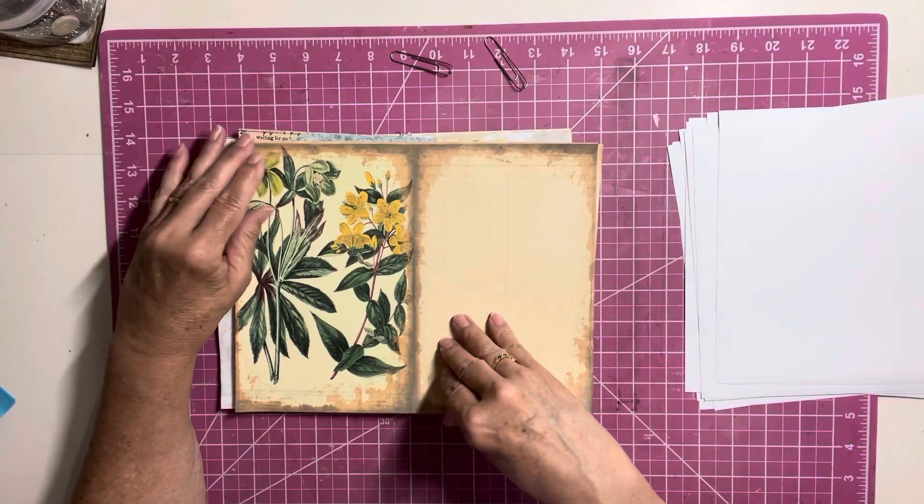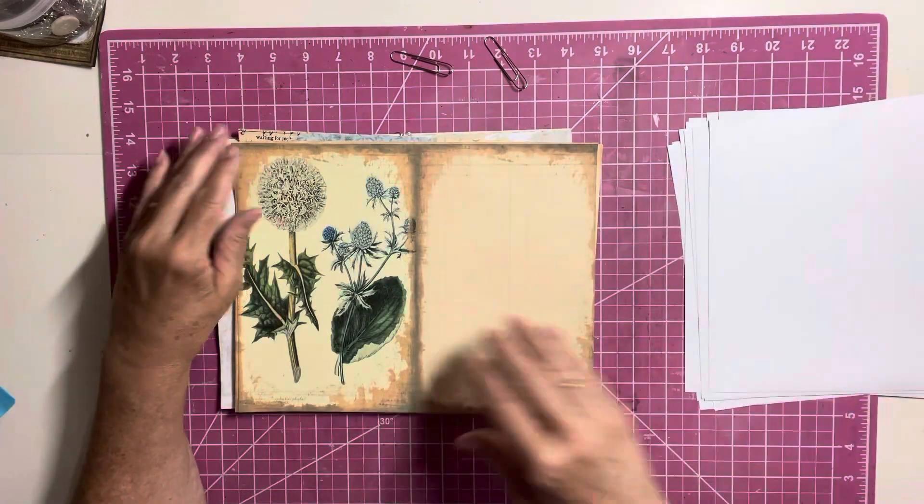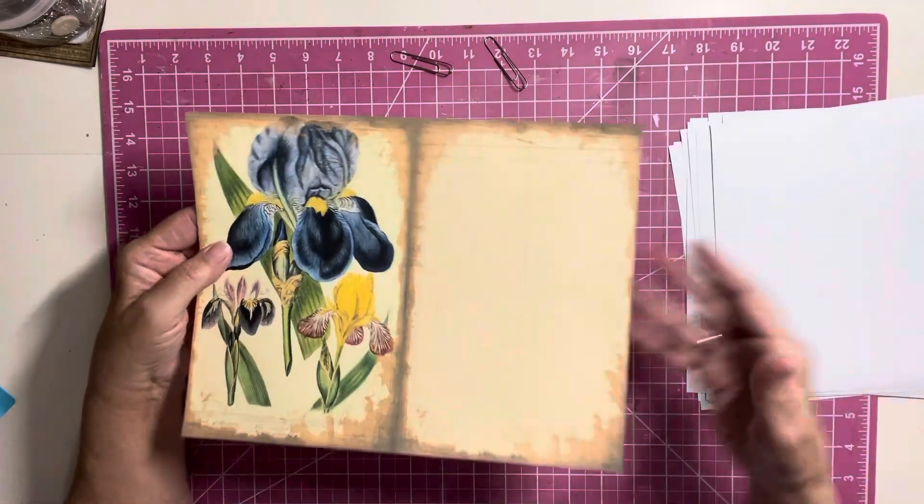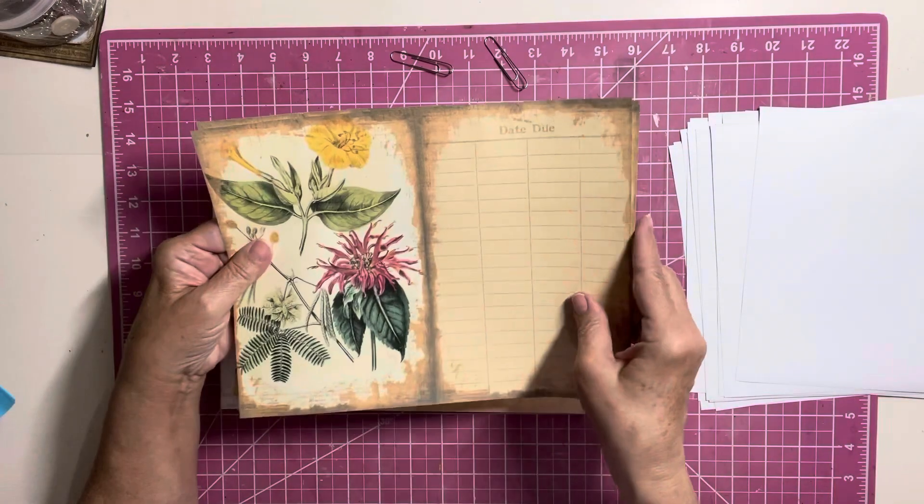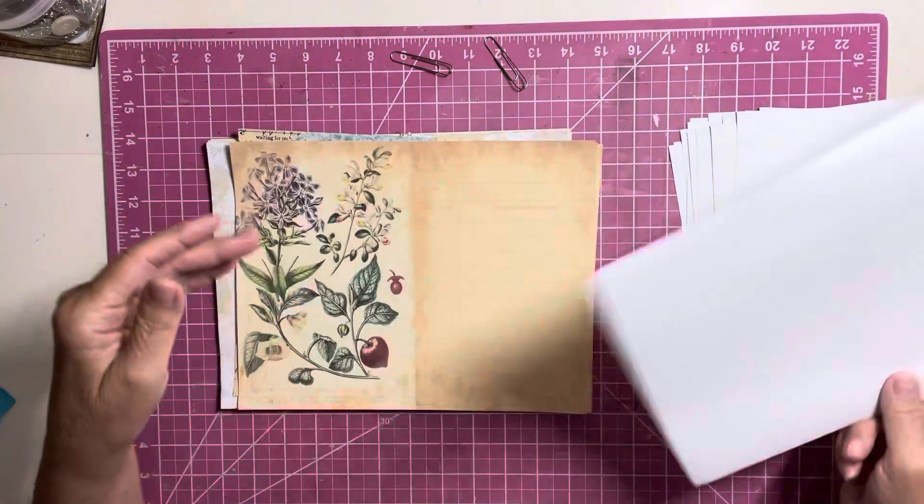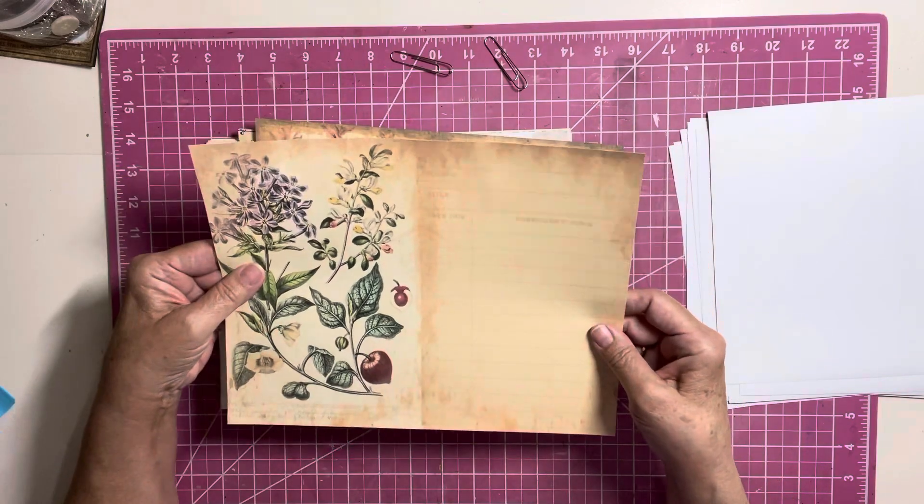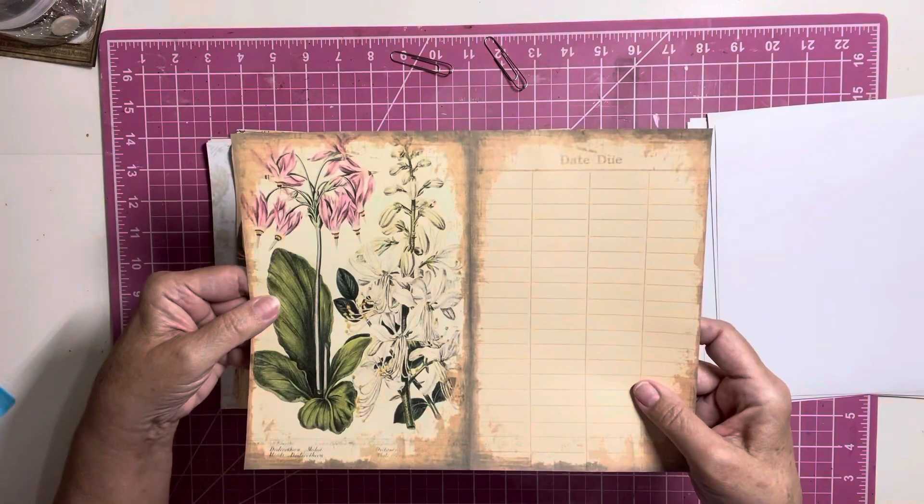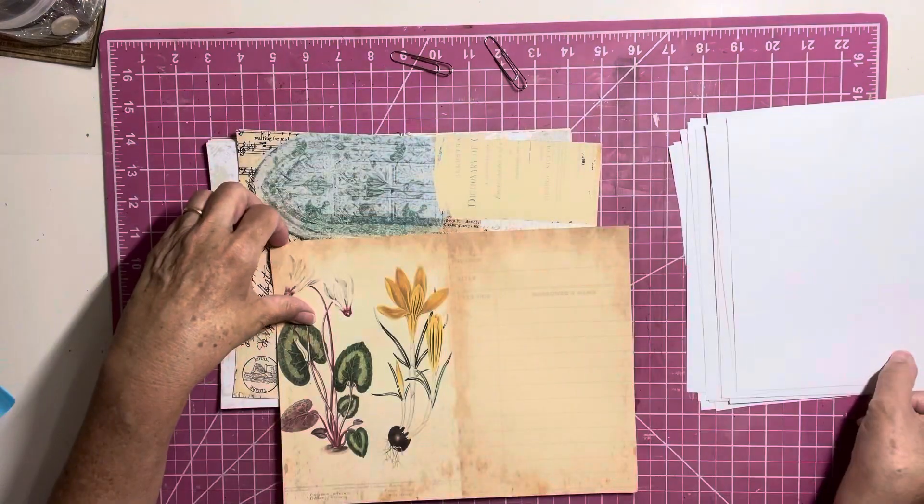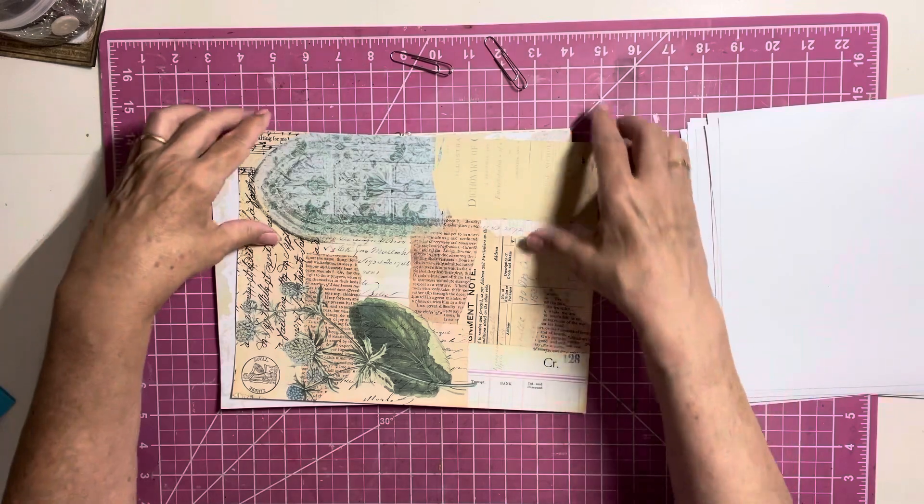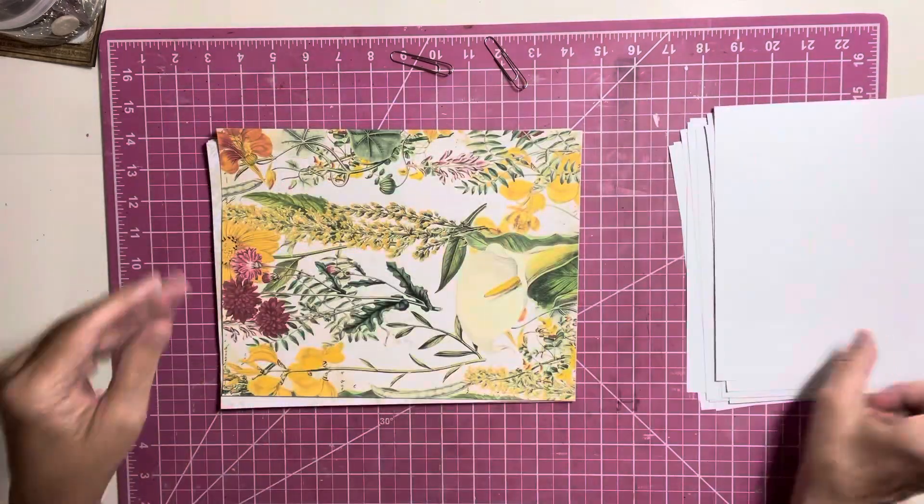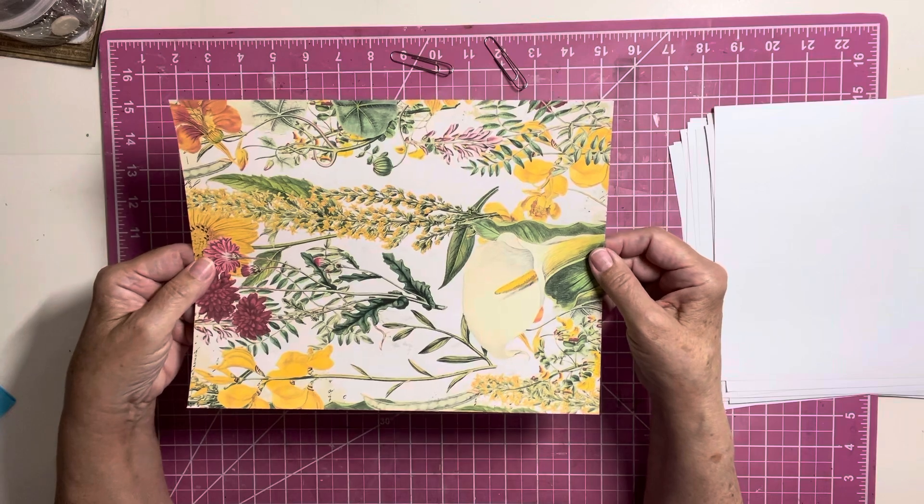But these are going to be so fun to work with. I think I had two here. Oh, look at that one. Beautiful. I can't wait to start my journal. Just going along at a steady pace, if that's okay. Get through this. And then we have this is a collage page, which I love.